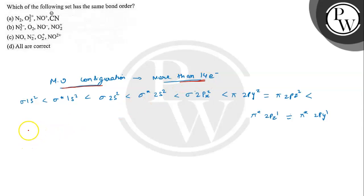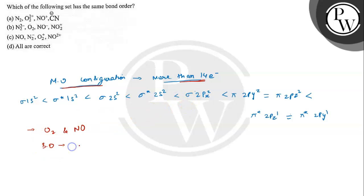The compounds that possess more than 14 electrons are O2 and NO. Now if we check the bond orders: bond order for O2 is equal to 2, bond order for O2⁺ is equal to 2.5, and bond order for O2²⁺ is equal to 3.